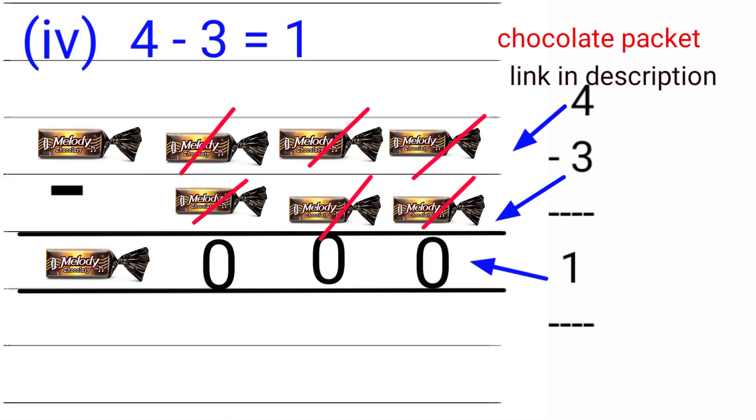Next, our fourth one: 4 minus 3 equals 1. I gave you four chocolates, you gave your friend three chocolates, so how many chocolates you left with? Only one. So 4 minus 3 equals 1.